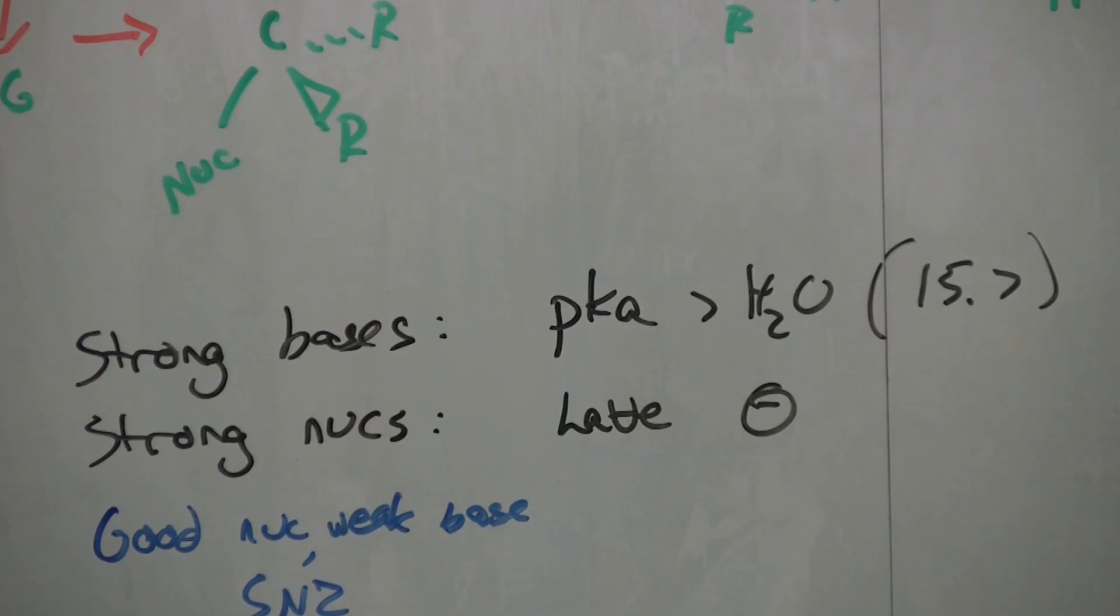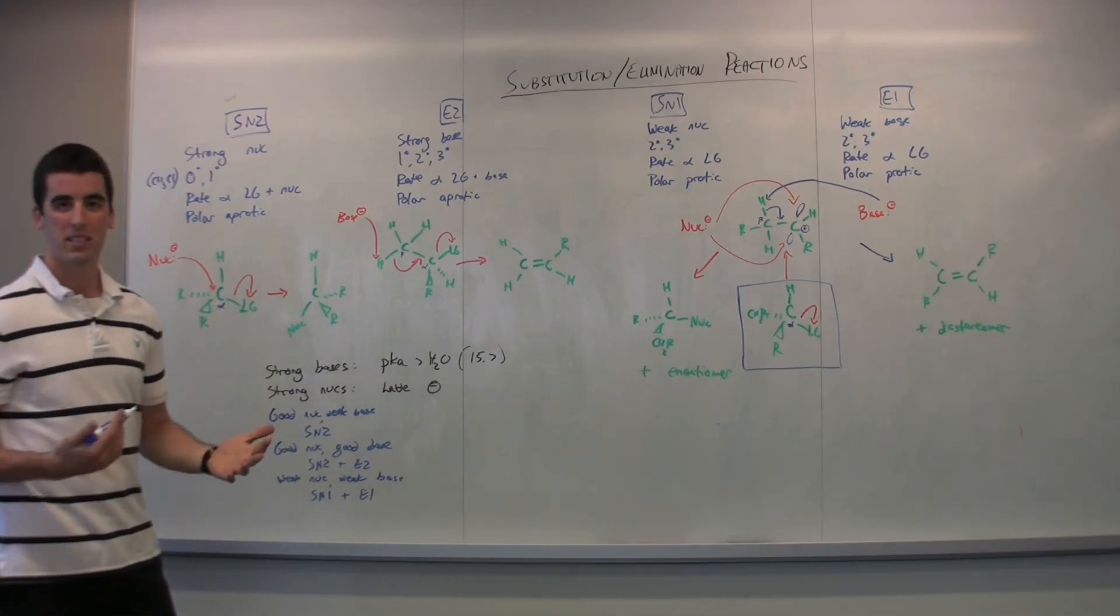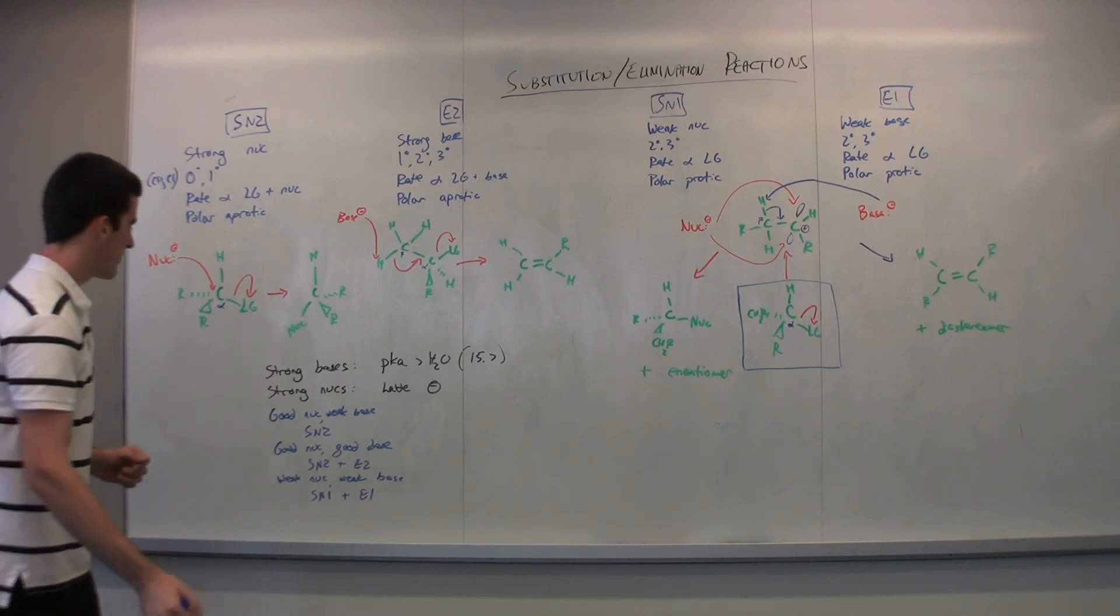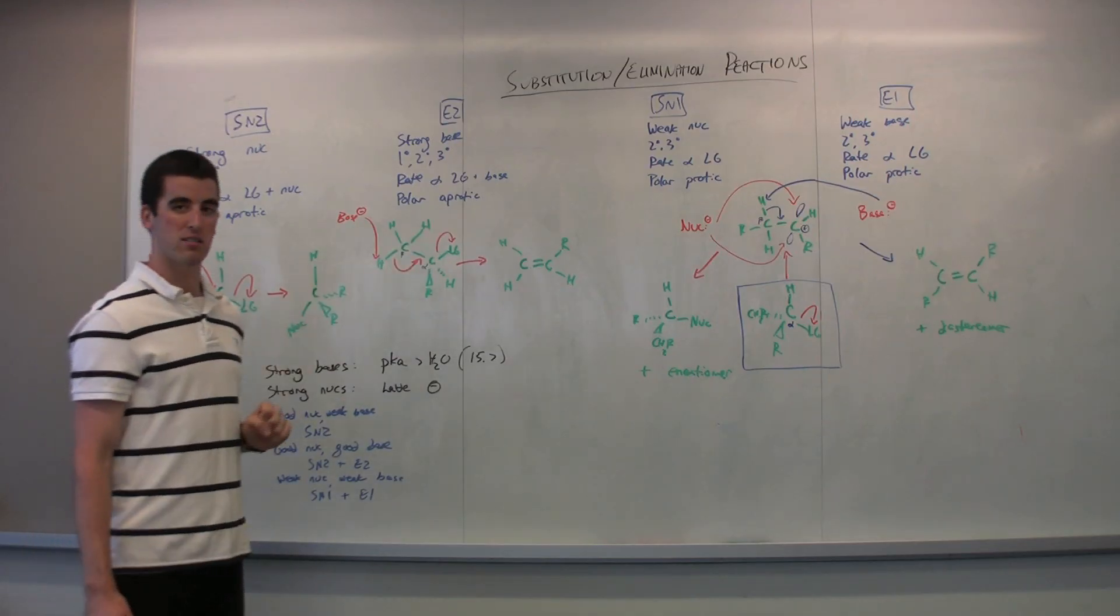Well, a strong base, you can say, is something with a pKa greater than water. That's a good middle ground there. And good to know that water is around 15.7. So anything higher than that is technically or relatively a strong base. Strong nucleophiles usually have negative charges. So if you see a nucleophile with a negative charge compared to one that doesn't, you can safely say that's going to be a stronger nucleophile. If you have a good nucleophile and a weak base, you're likely going to get SN2 products. If you have a good nucleophile with a good base, you'll probably get both. Because a strong nuke and a strong base is indicative of either. And then a weak nuke and a weak base moves us to SN1 and E1, which are the next two reactions I'll go into.